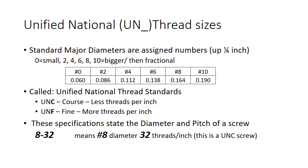The Unified National System has determined that a fastener with a major diameter of 0.060 inches is a number zero. If it has a 0.112-inch major diameter it's a number four; 0.164 inches is a number eight, and so on. For any one of these sizes there are at least two options: a coarse thread and a fine thread.